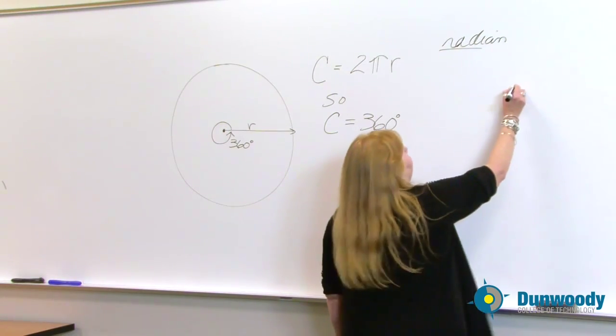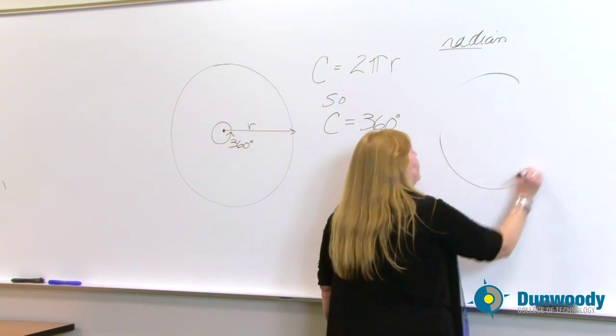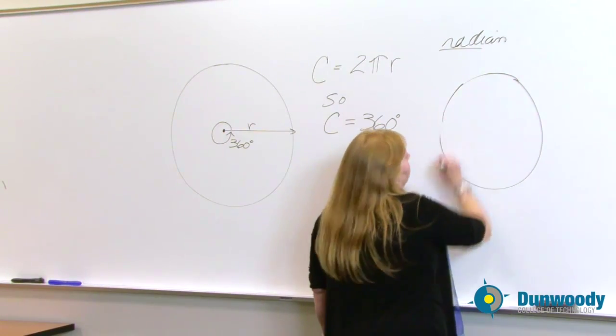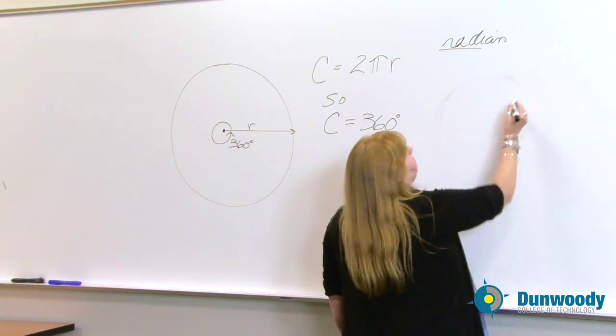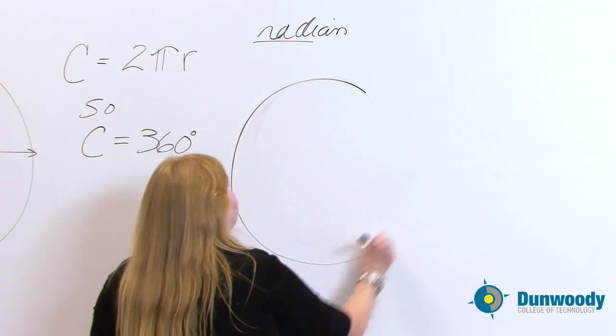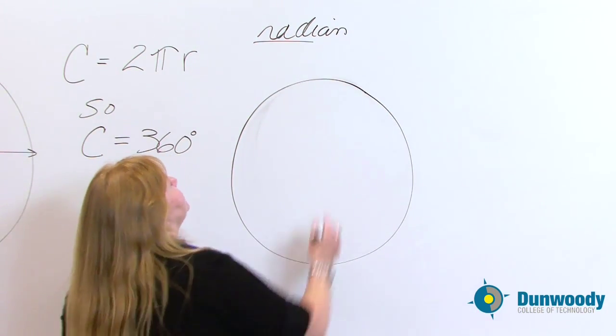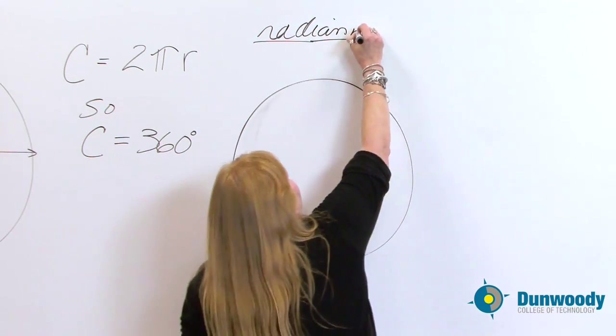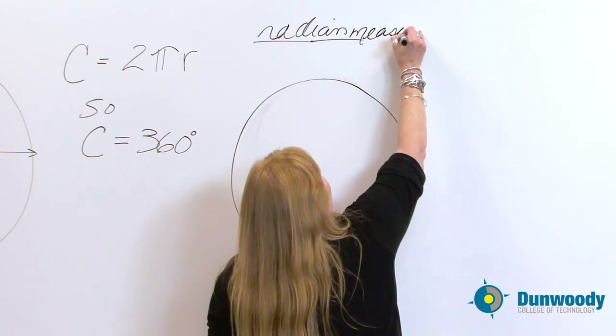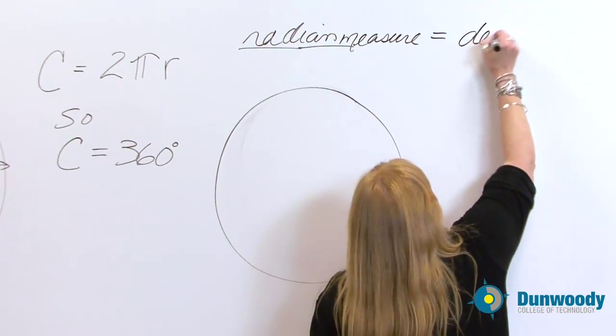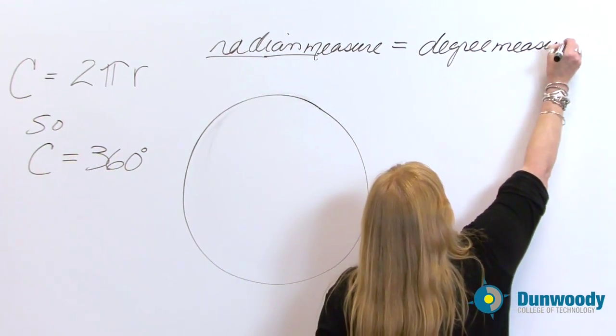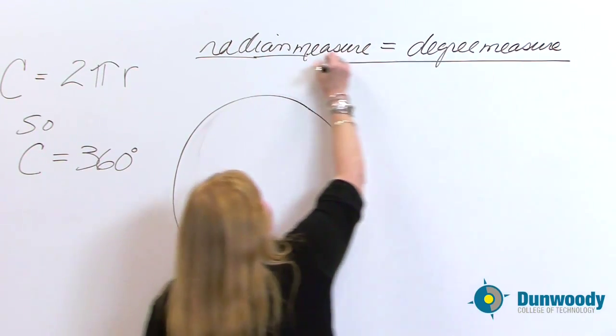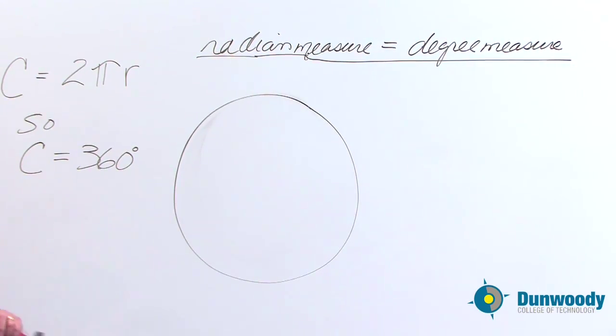The most common thing that starts to happen is, I'm going to draw a better circle than that. There we go, that's a little better. So, radian measure means exactly the same thing as degree measure. In fact, just two different ways to reference information about exactly the same thing.